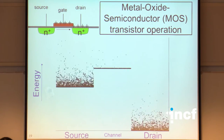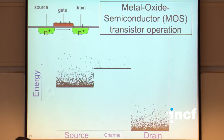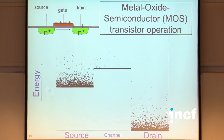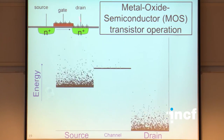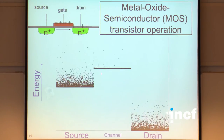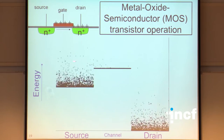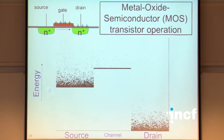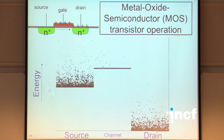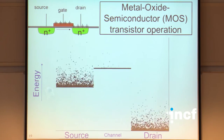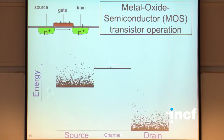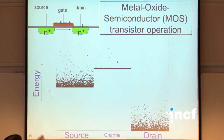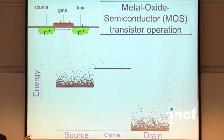In an animation you can see electrons bouncing around, occasionally hopping over into the channel, diffusing along it, and falling out on the drain side. By changing the gate voltage you raise or lower the barrier — increasing gate voltage lowers the barrier, allowing more current to flow. That is how the transistor operates under different voltage conditions.